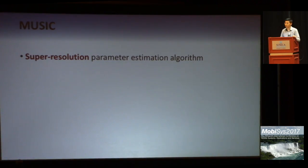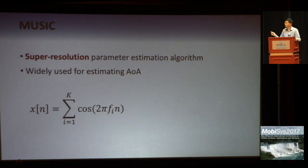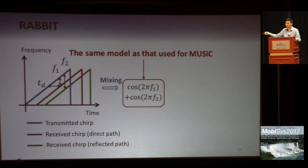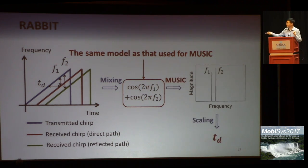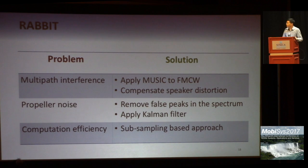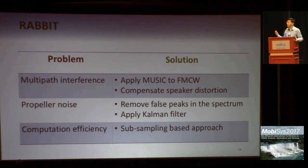MUSIC is the potential solution for this problem. It is a super-resolution parameter estimation algorithm, widely used for estimating frequency components. It takes a sum of cosines as input and computes the pseudo-spectrum. The peaks in this spectrum indicate the frequency components of the input. The key observation is that our mixed signals follow the exact MUSIC model, so we can apply MUSIC here. In this case, we can clearly distinguish between F1 and F2 and hence the corresponding propagation delays. By applying MUSIC to FMCW, our approach significantly enhances the capability of resolving multipath, handling noise, and reducing computation cost.